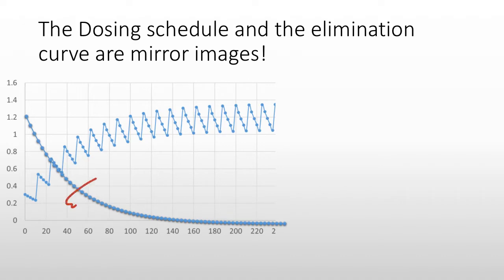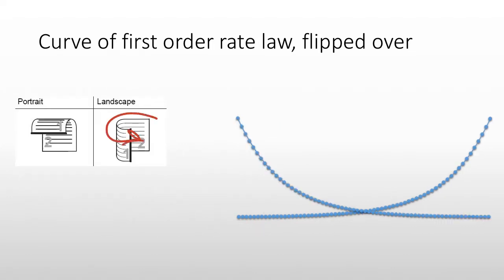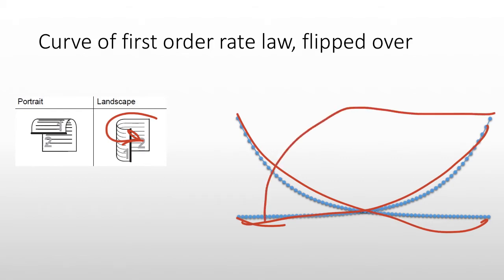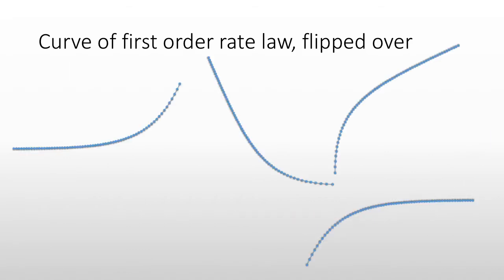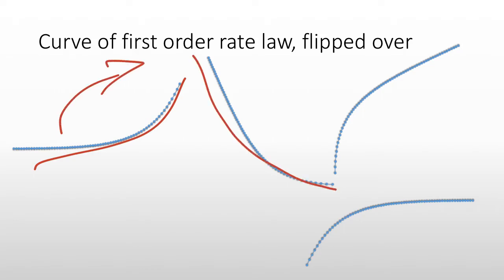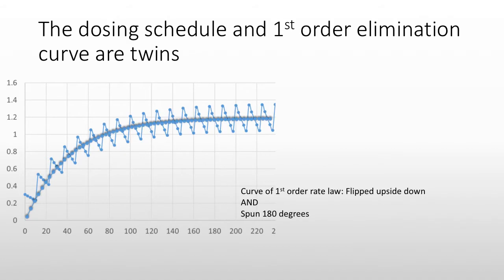I want to flip this on its edge and rotate it. I've flipped this thing over longwise — so it was like this, and then I flipped it so it's like this. Then I rotate it: starting right here, rotating this way a little bit, getting to here, rotating a little bit more. Same shape — in fact, it superimposes over it. My first order elimination also describes my concentration at steady state.